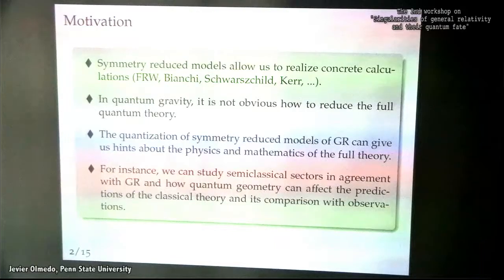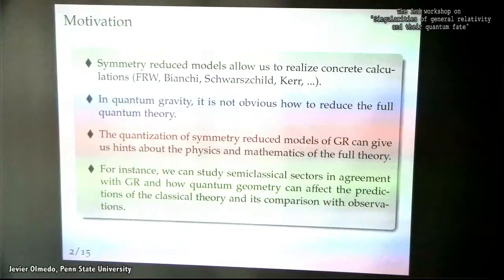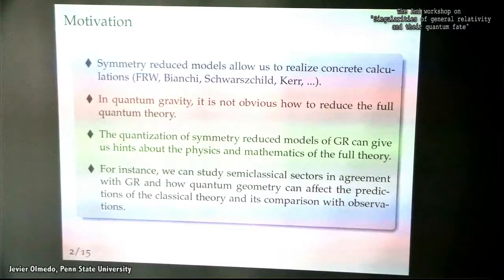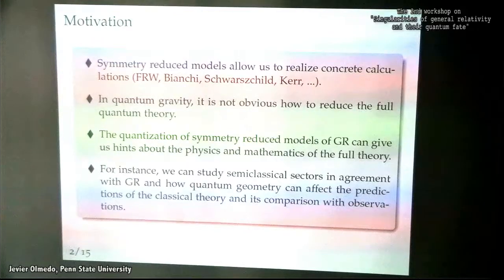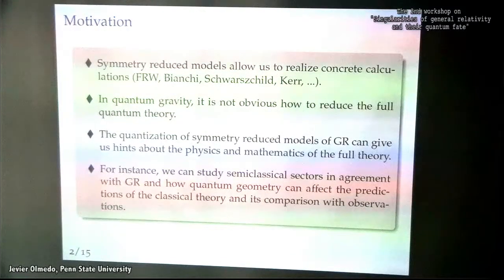Among the symmetry-reduced models I want to consider here, I will focus on cosmological models — like Friedmann-Robertson-Walker or Bianchi spacetimes — and black hole solutions like Schwarzschild or Kerr geometries. I will focus on Schwarzschild ones because Kerr is still not well understood at the moment in quantum gravity. That is the quantum theory I'm going to talk about today.